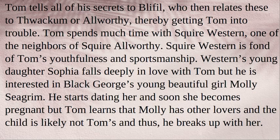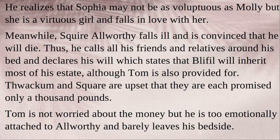Tom spends much time with Squire Western, one of the neighbours of Squire Allworthy, who is fond of Tom's youthfulness and sportsmanship. Western's young daughter Sophia falls deeply in love with Tom, but he is initially interested in Black George's daughter Molly Seagrim. He starts dating Molly and she soon becomes pregnant, but Tom learns she has other lovers and the child is likely not his, and so he breaks up with her. He then realizes that Sophia, though not as bold as Molly, is a virtuous girl, and falls in love with her.